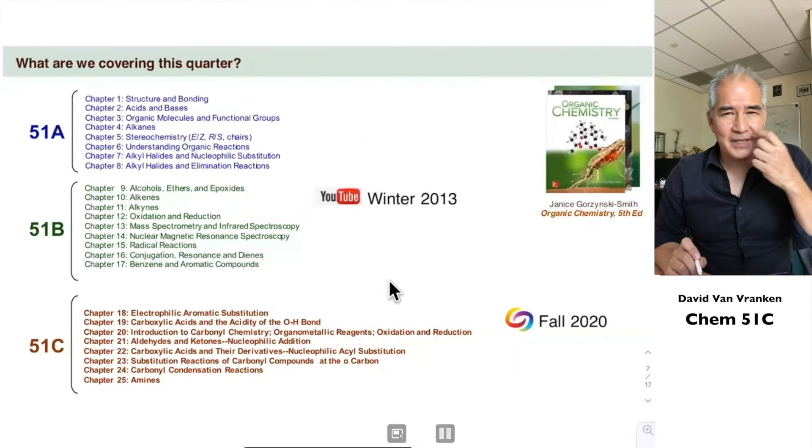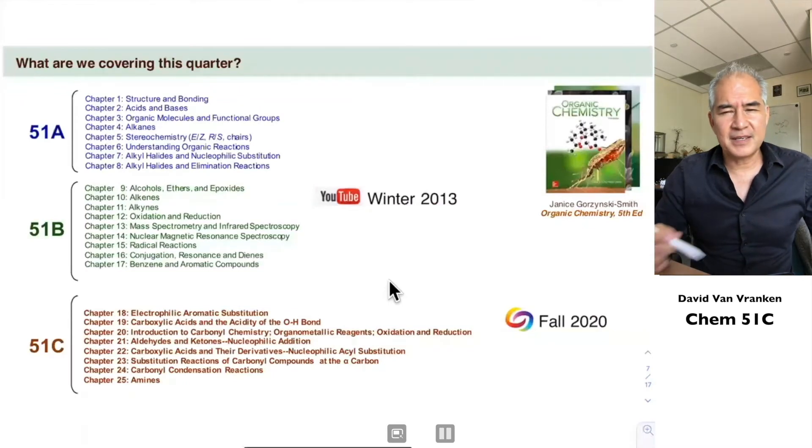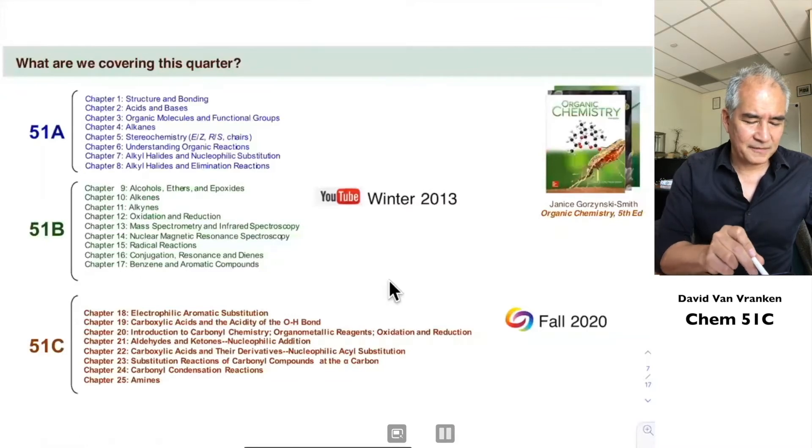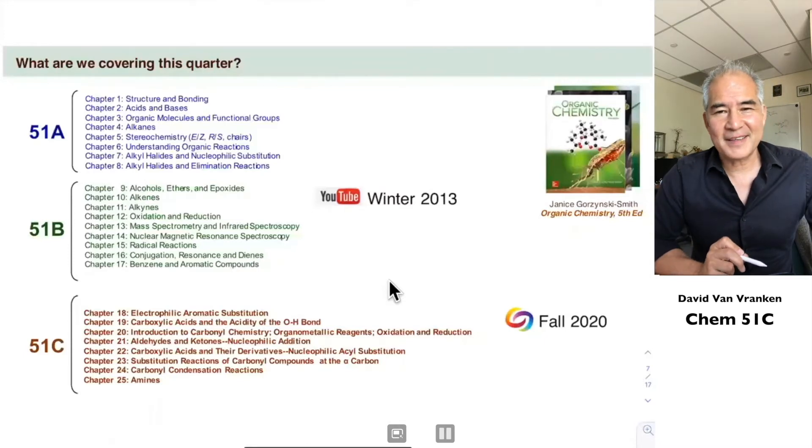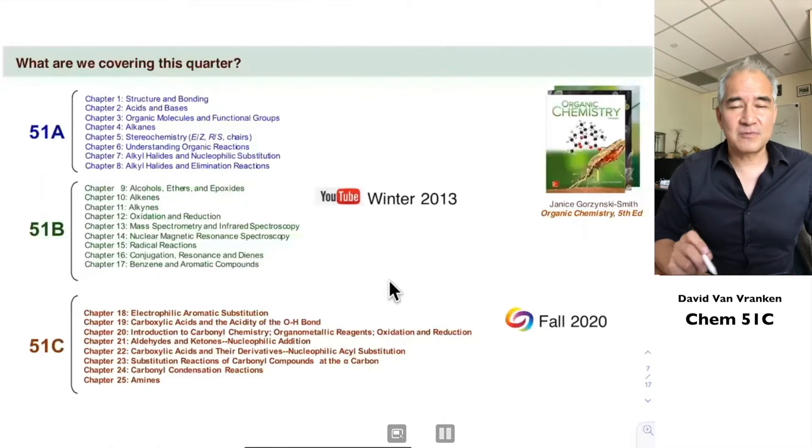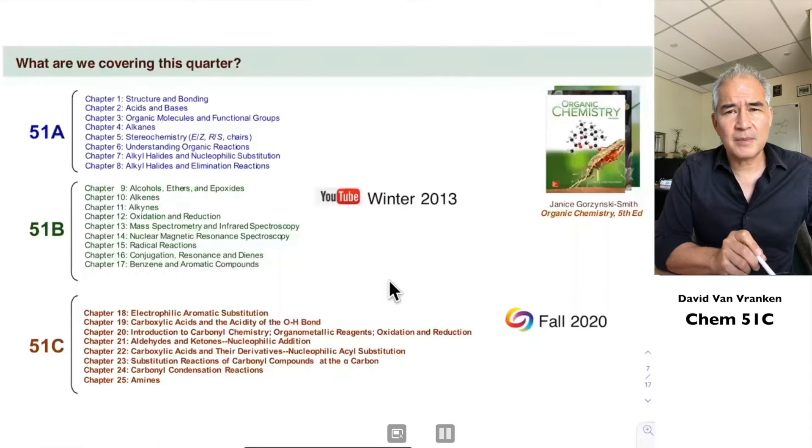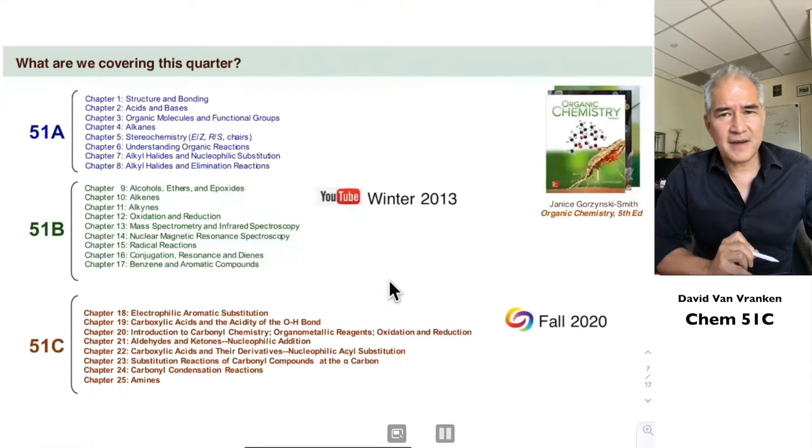Here's what we're covering this quarter. Whether you've used the 5th edition or the 6th edition of the Gorzinski-Smith organic chemistry textbook, it's the same kind of material. In 51A and 51B, you didn't cover that many reactions. We are just going to pile on the reactions this quarter. That's really what organic chemistry is about - lots and lots of reactions and transformations. This quarter in Chemistry 51C, we're going to be covering chapters 18 through 25 in the book. That's what our course will cover, and that's what I'm going to test you on.